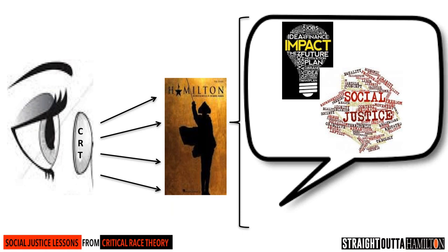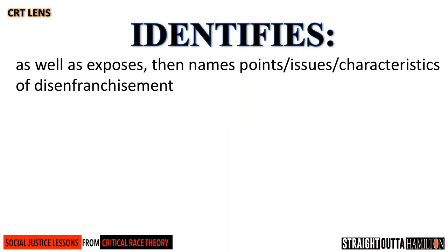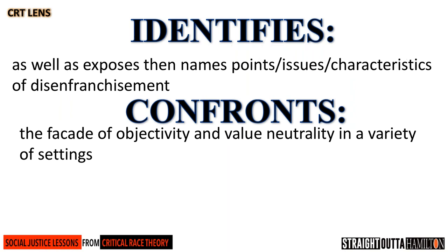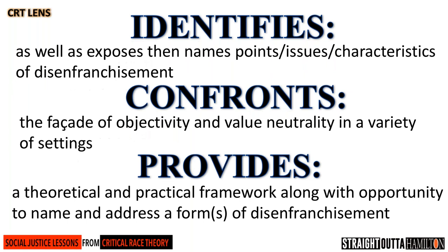Let me offer a visual that reiterates my point. Looking at Hamilton through a critical race theory lens allows us to have a great social impact and social justice discussion. With that said, let's look at the design, purpose, and use of a CRT lens. The CRT lens identifies and exposes the names, points, issues, and characteristics of disenfranchisement. But it also confronts the facade of objectivity or value neutrality in a variety of settings. And then it provides a theoretical and practical framework, along with the opportunity to name and address forms of disenfranchisement.